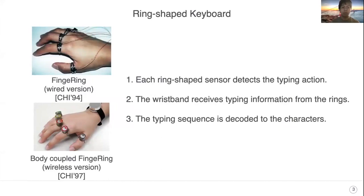Here, we introduce the ring-shaped keyboard that supports text input by finger typing. This consists of five ring-shaped sensors which detect the finger typing, and one wristband-shaped reader which receives the information from the sensors. And thus, the ring-shaped keyboard supports high-speed text input with small typing force.